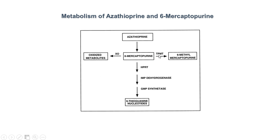Alternatively, 6-mercaptopurine can get shunted through an enzyme called thiopurine methyltransferase and get converted into an inactive metabolite, 6-methylmercaptopurine, or it can get shunted through xanthine oxidase and get converted to an inactive metabolite, 6-thiouric acid, or other oxidized metabolites.